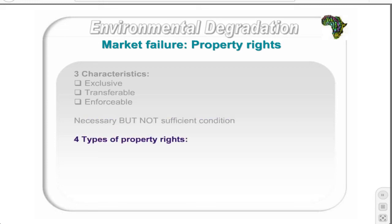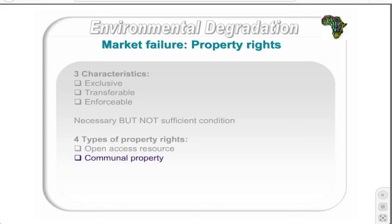There are four types of property rights in existence: open access resources, communal property, private property, and state property.